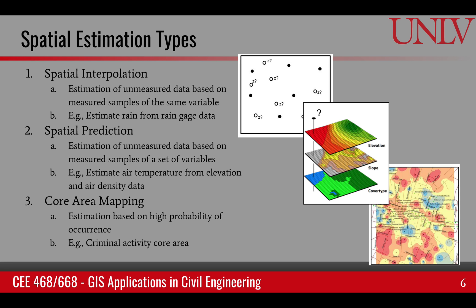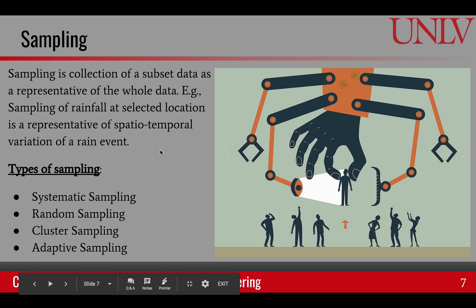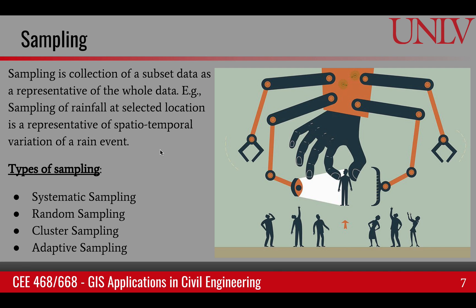There are a couple of things about sampling that we need to learn. Sampling is a process in which we collect a subset data set that is representative of the whole data set — we choose selected points. For example, when we install rain gauges in a watershed, we are measuring at selected points, but those values are representative of the whole process over the watershed. There are four types of sampling: systematic sampling, random sampling, cluster sampling, and adaptive sampling.